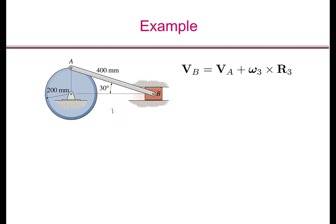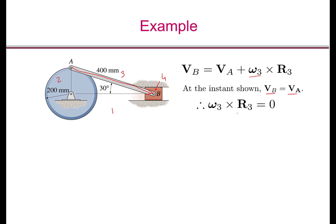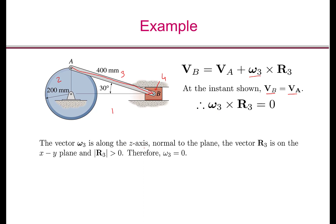Using the notation: link 1 is the ground, link 2 is the disk, link 3 is AB, and link 4 is the slider. The velocity of B equals velocity of A plus omega_3 cross R3, where R3 is the vector from A to B. At the instant shown, both A and B are moving horizontally, so VB equals VA, which means omega_3 cross R3 equals zero. Since omega_3 is along the z-axis and R3 is in the xy-plane with nonzero magnitude, this implies omega_3 equals zero.